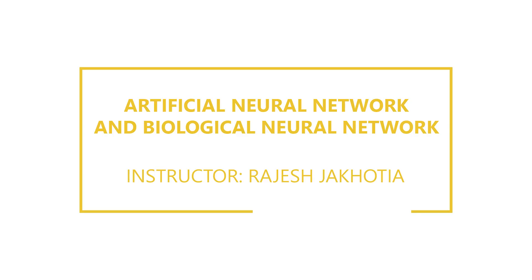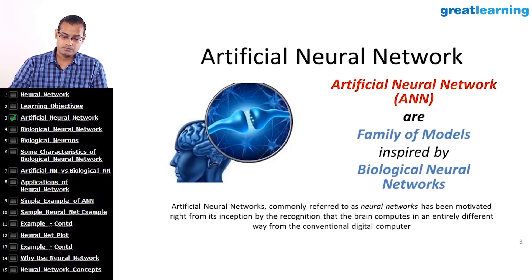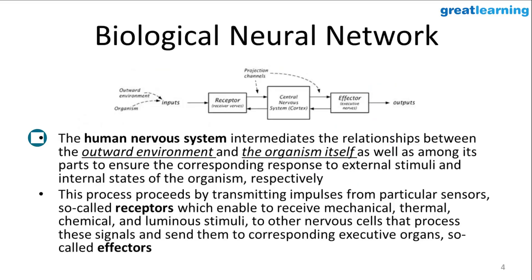The neural network models which are designed to mimic the way the brain functions are called artificial neural networks. To understand the concept of artificial neural networks, I will first use the analogy of a biological neural network.